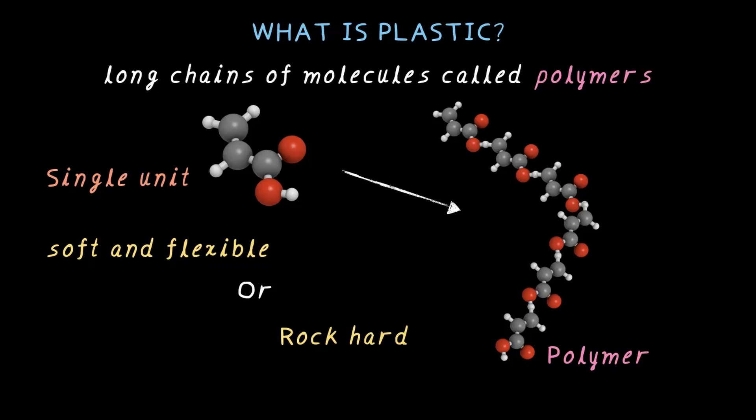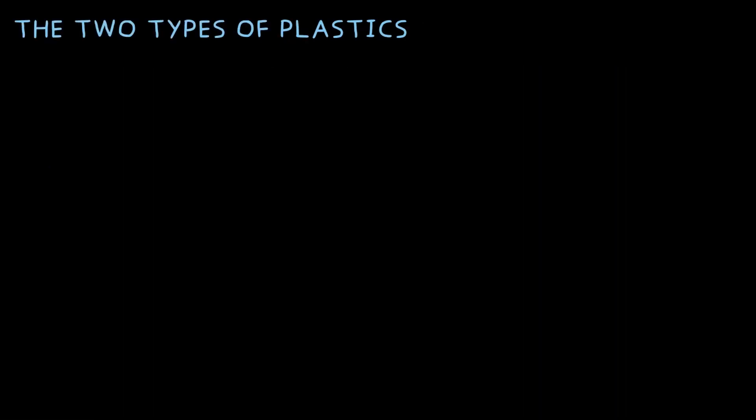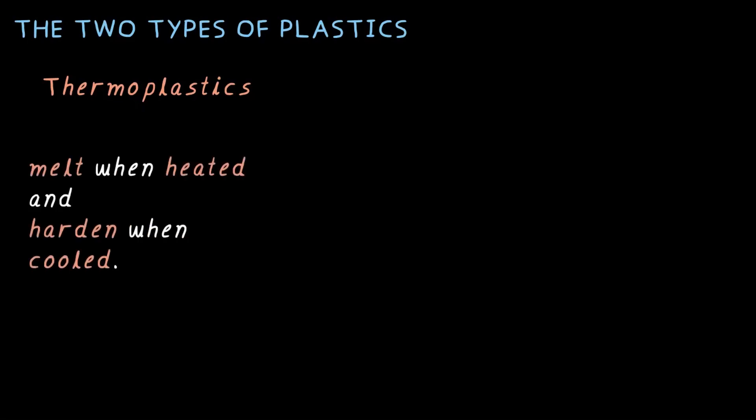Let's see what are the different types of plastics. There are majorly two types of plastic: thermoplastic and thermosetting plastic. Let's talk about thermoplastics first. These are the type of plastics that melt when heated and harden when cooled. Think of them like butter. You can melt and reshape them over and over again.